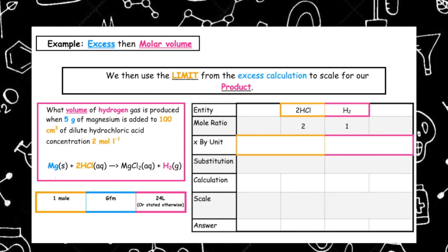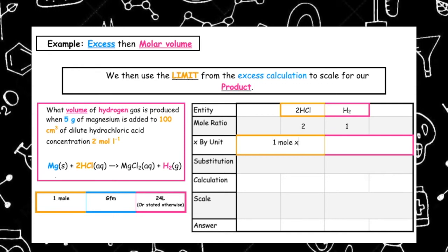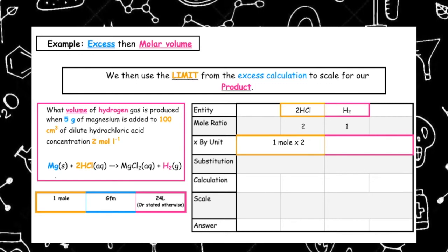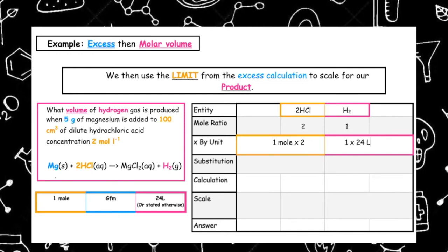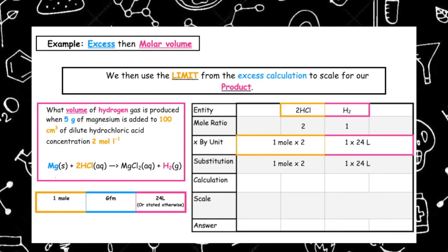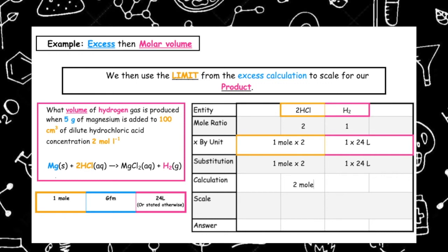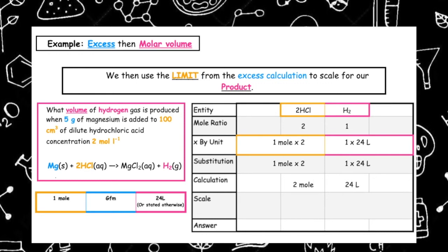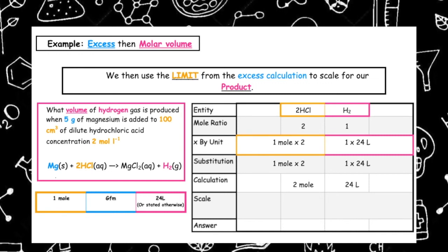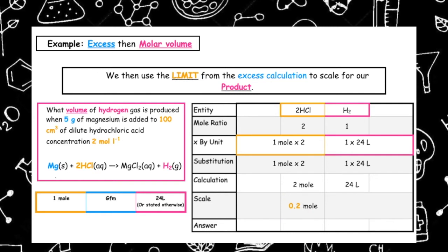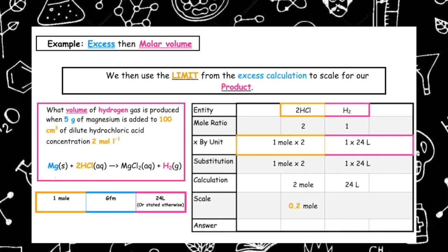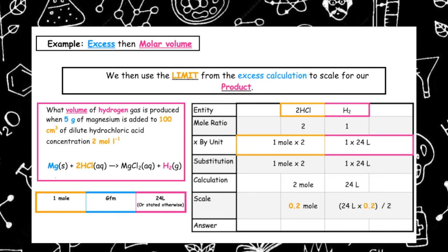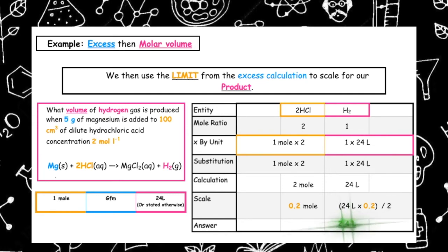We decide what unit to work in — the question asks for litres for our hydrogen, so we use 1 times 24 litres. This means 2 moles of hydrochloric acid will produce 24 litres of hydrogen. We actually have 0.2 moles of hydrochloric acid, so cross-multiplying: 24 times 0.2 divided by 2 gives us a total volume of 2.4 litres.